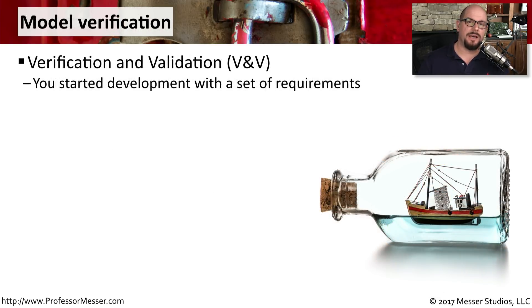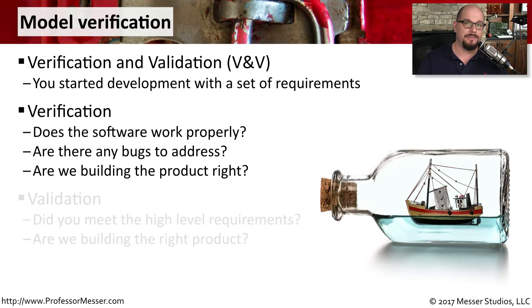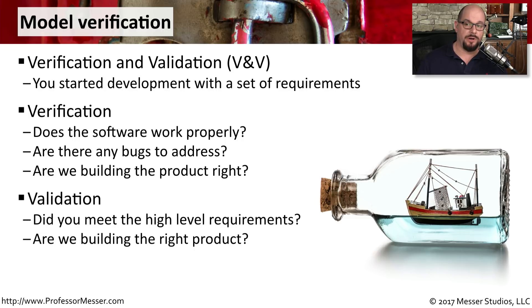Once you reach the end of the development cycle, it's time to bring everything around full circle and perform verification and validation. At the beginning of this process, you ideally started with a set of objectives, and from those objectives you built this new application. The first thing you might want to do is perform a verification of the software — is it working properly, are there any bugs, and is everything performing as expected? From a broader perspective, there is validation that needs to occur. We know there were requirements created at the very beginning of the project — is this application meeting those requirements? Is this the correct product that was originally intended to be created? Both verification and validation are important: not only must the application perform the way it should, but it must be the correct application that should have been created in the first place.